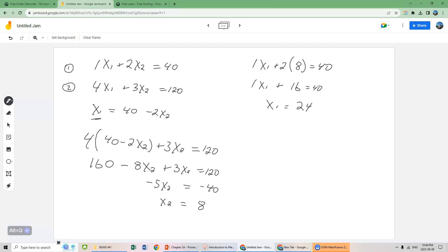So those are the coordinates for point B. x1 equals 24, x2 equals 8. We can solve the profit function by substituting those values in for x1 and x2. So 40 times 24 plus 50 times x2, x2 equals 8.